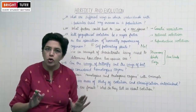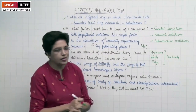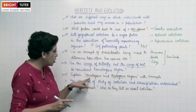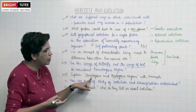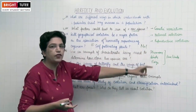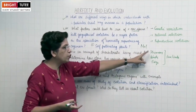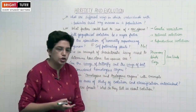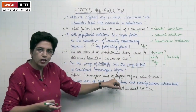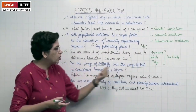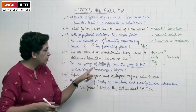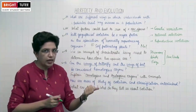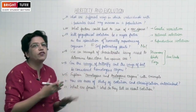Such organs with same function but different structure are called analogous organs. To summarize: homologous organs are those of different organisms having similar structure but different function — example, forelimbs of humans, birds, and frogs. They are similar structurally but perform different functions. Analogous organs are those with different structures but similar functions — example, wings of butterfly and wings of bat. Butterfly wings are made of thin membrane while bat wings are made of folds of skin, but both are used for flying.